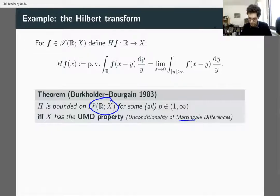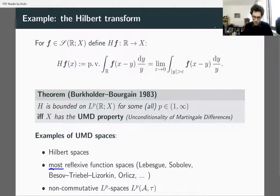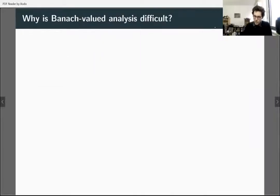The UMD property is a probabilistic property defined in terms of martingale differences, but it has many different characterizations. The key examples of UMD spaces are Hilbert spaces — Hilbert spaces are the best Banach spaces. Most reflexive Banach function spaces are UMD. I underline 'most' and 'reflexive' because UMD implies reflexive, and there are some strange counterexamples. Also, non-commutative L^p spaces — those with applications to operator theory — are also UMD.